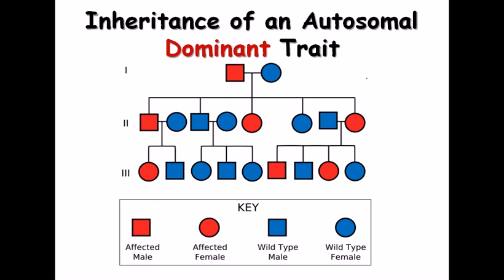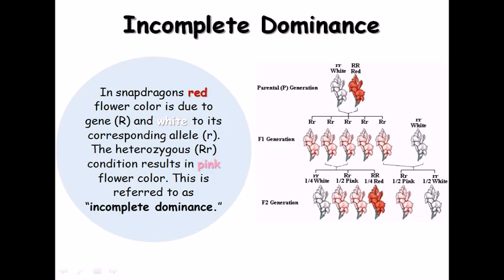In autosomal dominant inheritance, a defective single chromosome will give you the disease. In the dominant disease pedigree shown, if the father is diseased, in the next generation a boy and two girls are diseased. Because the disease trait is dominant, having only one defective gene means you get the disease — so it transfers much more readily through generations. This makes autosomal dominant diseases much more dangerous than autosomal recessive diseases.